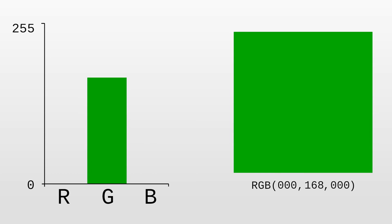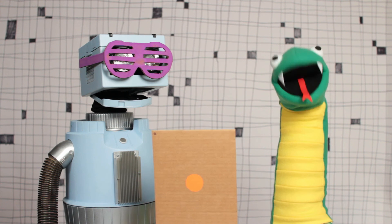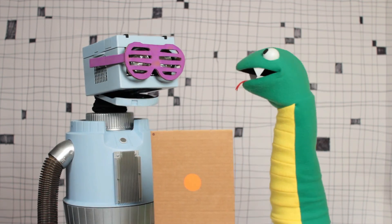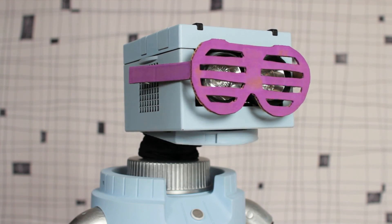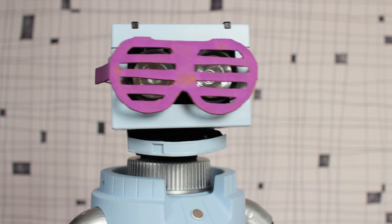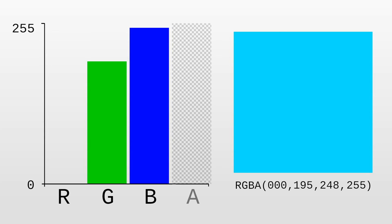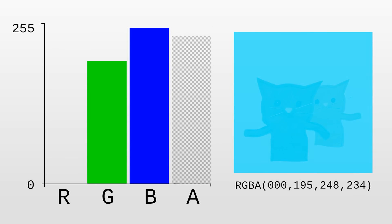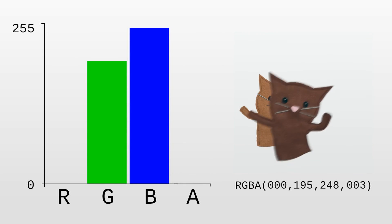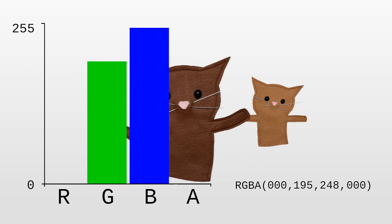My favorite color is 0, 195, 248. And my favorite color is — let me guess — green? No, it's chartreuse. A pixel can also have an alpha value that determines how transparent it is. An alpha value of 255 means the pixel is opaque — you can't see through it. An alpha value of 0 means the pixel is completely transparent — you can't see it at all.